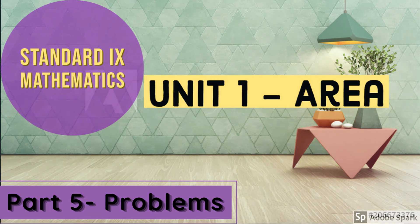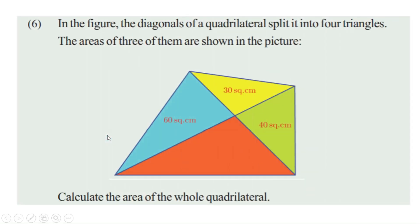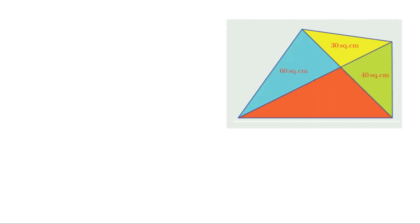Welcome to Maths Companion. In the last video we discussed questions from page 20 and 21. Today we are going to discuss the remaining questions. The next problem: in the figure, the diagonals of a quadrilateral split it into four triangles. The areas of three of them are shown in the picture. Calculate the area of the whole quadrilateral. Let us look at the figure first and give a name for convenience.